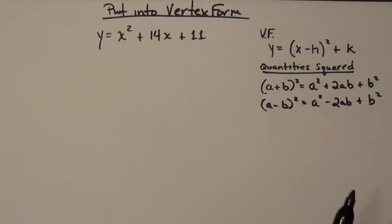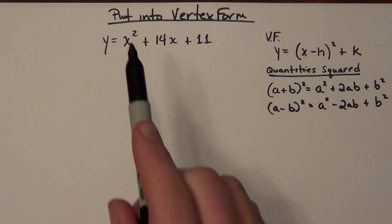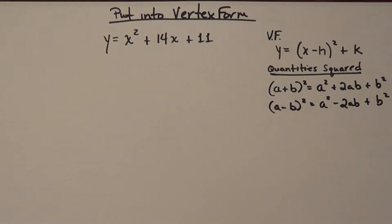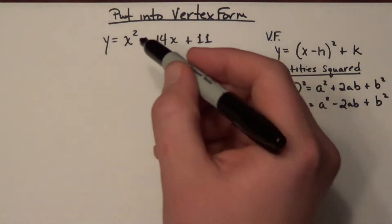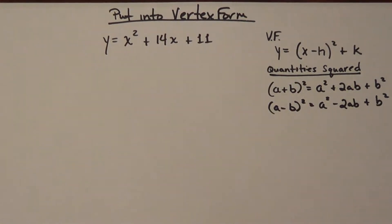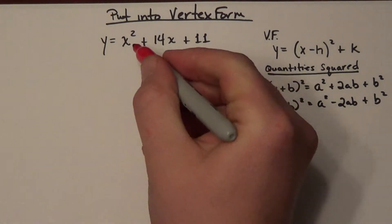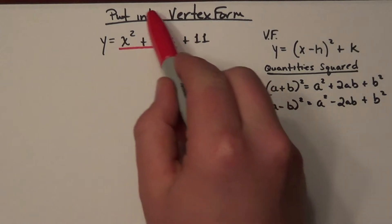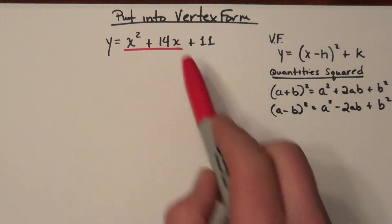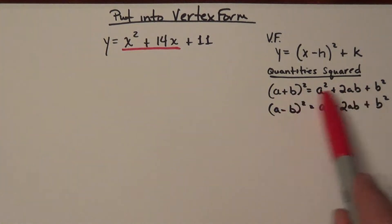So let's take a look at this equation y equals x squared plus 14x plus 11. What we're going to do is ignore the 11 for a minute and take this part of the quadratic — the x squared plus 14x — and do something called complete the square. I'm going to take this information and complete this form over here.